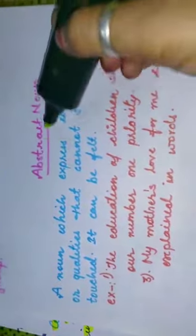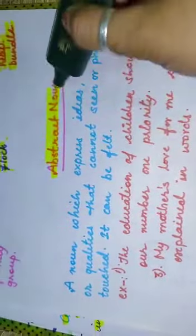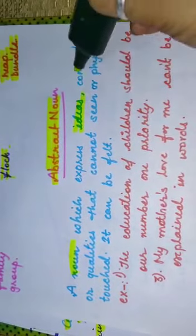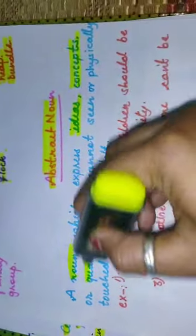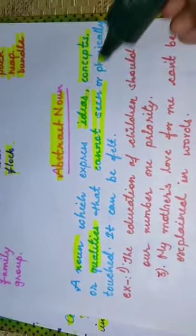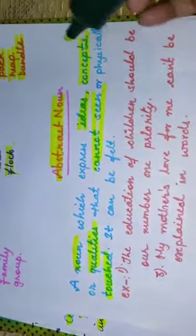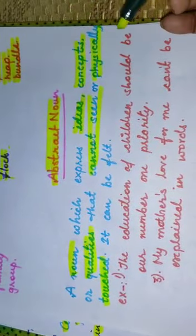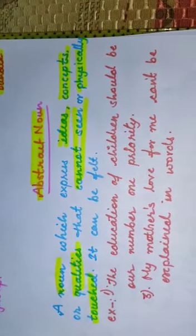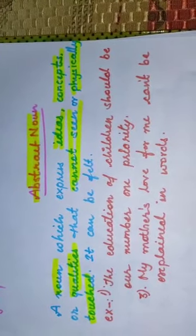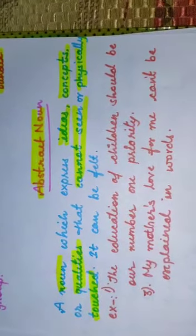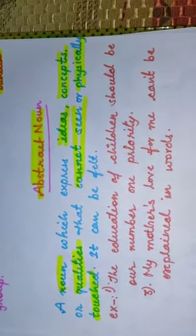An abstract noun is a noun which expresses ideas, concepts or qualities that cannot be seen or physically touched. Those things are known as abstract nouns.